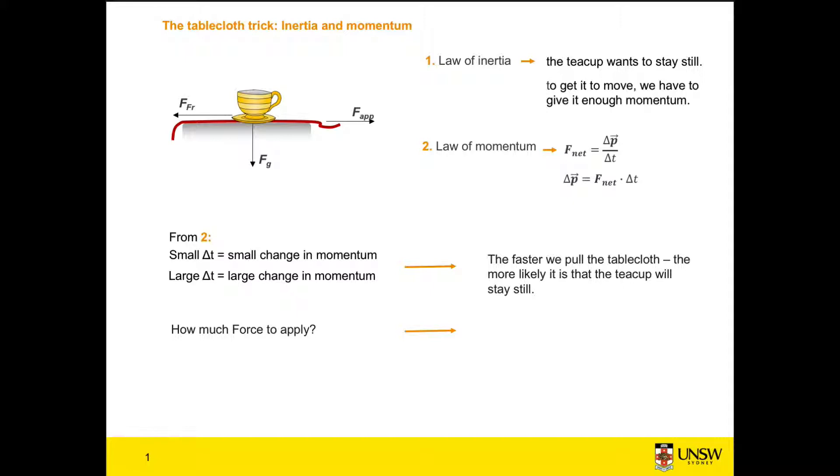So in conclusion, to make the tablecloth trick work we need to pull the tablecloth fast enough and with enough force, and that will keep the change in momentum of the teacup small enough that the teacup should stay put.